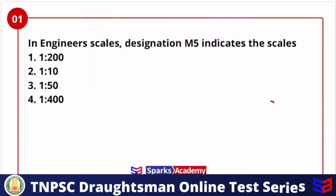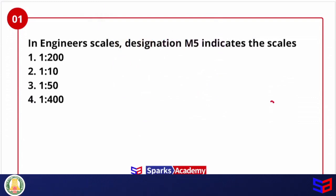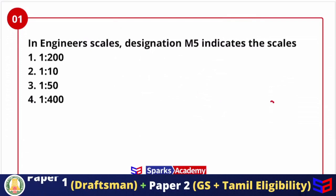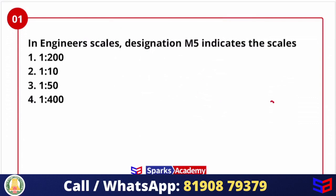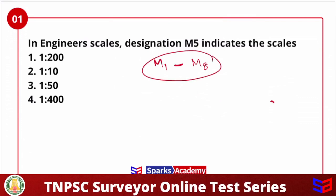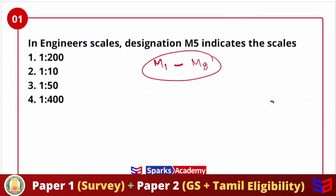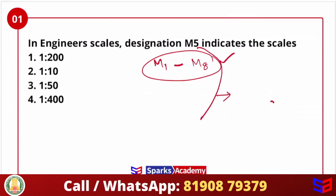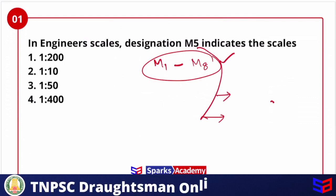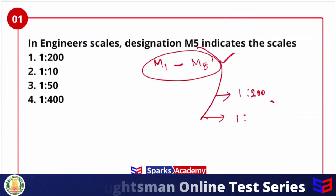Before answering, let's understand what an engineer scale is. When you have a very small object and you want to draw it, you can reduce or enlarge the scale using the engineer scale. We can designate from M1 to M8. M1 to M6 are commonly referenced. For M5 designation, we have two scales available.